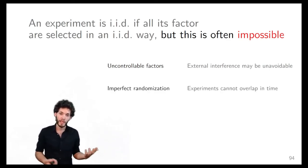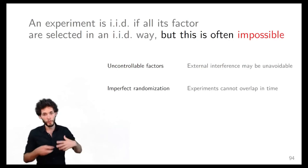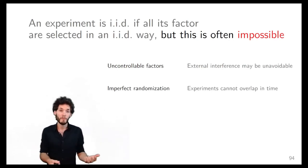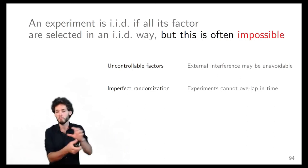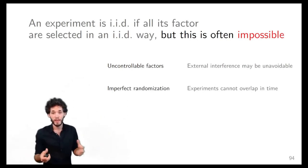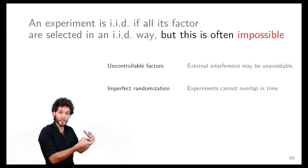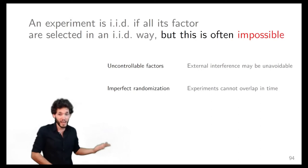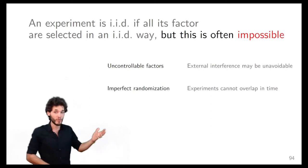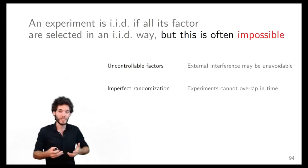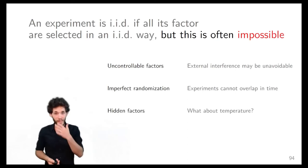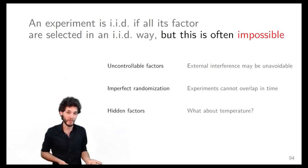Another problem is that randomization is not necessarily perfect. For example, if you pick a random time for an experiment that lasts 10 minutes, you can't have two experiments overlap in time, meaning the next randomly selected time can't be truly random — you have to exclude the window already taken. So it's not exactly memoryless either.